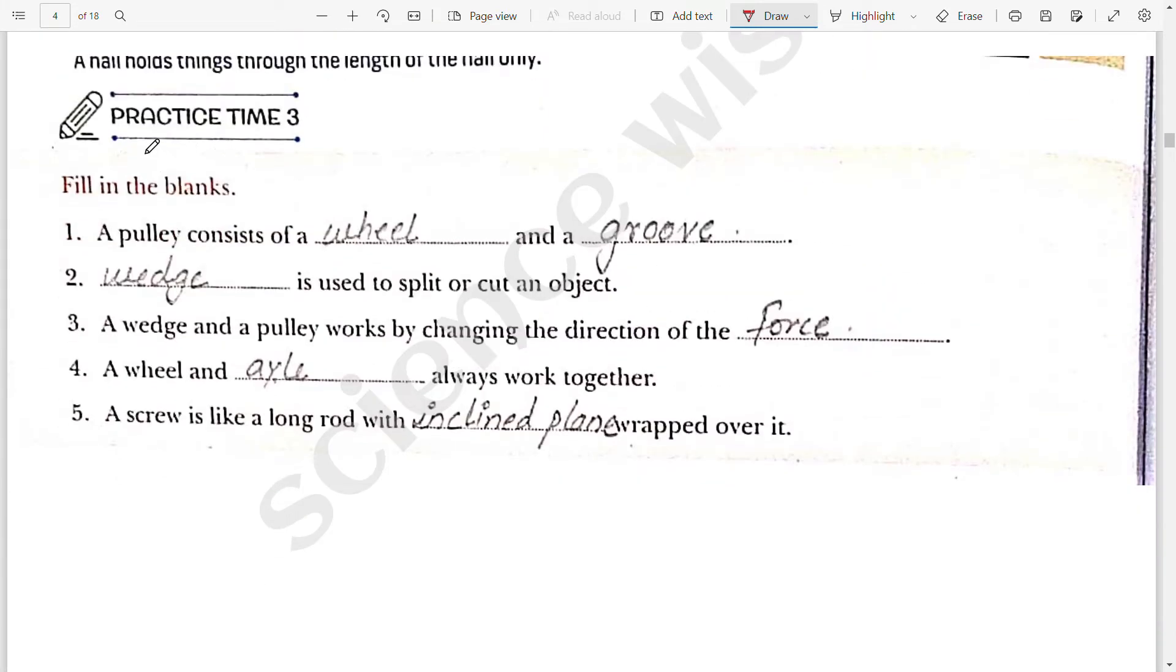Next, we go to practice time three, fill in the blanks. First, a pulley consists of a wheel and a groove. A pulley is made of a wheel and a groove in that wheel. Second, a wedge is used to split or cut object. Yes, wedge is used.